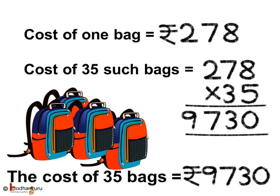Let us see again how we solve this problem. Cost of one school bag is equal to 278 rupees. Now we need to find the cost of 35 such bags. So cost of 35 such bags is equal to 278 multiplied by 35, which is 9,730. Thus the cost of 35 bags is 9,730 rupees.